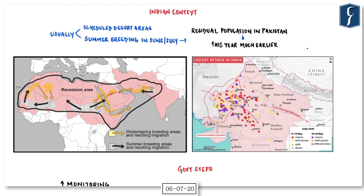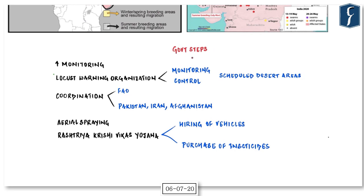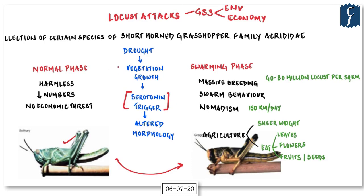India has been facing the onslaught of locusts especially at the western frontiers — Rajasthan and Gujarat — since the beginning of this year. In recent months the locusts have even migrated as far as Delhi and Gurgaon. These locusts are certain species of short-horned grasshoppers belonging to the family Acrididae — not all grasshoppers are locusts, but short-horned grasshoppers are called locusts.